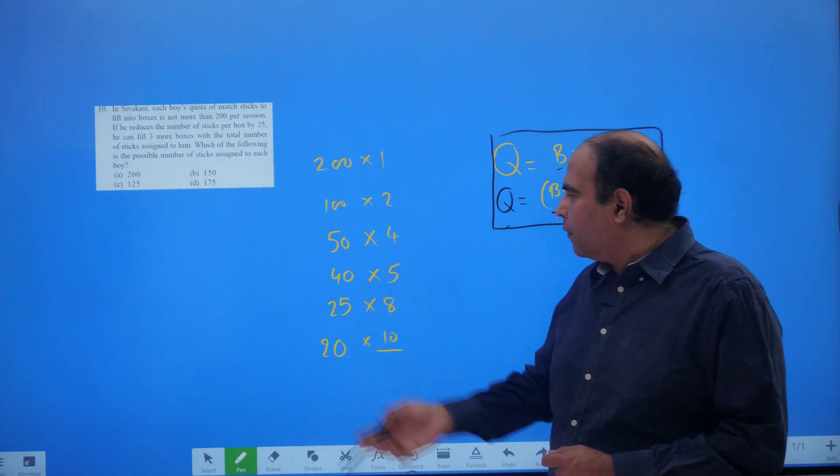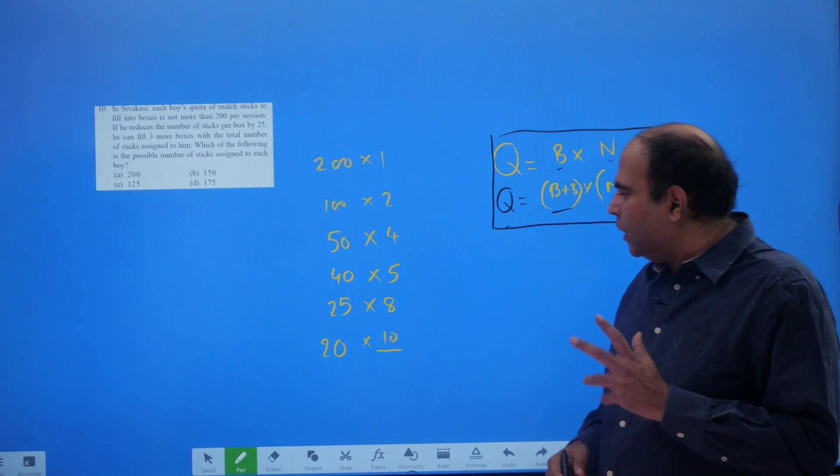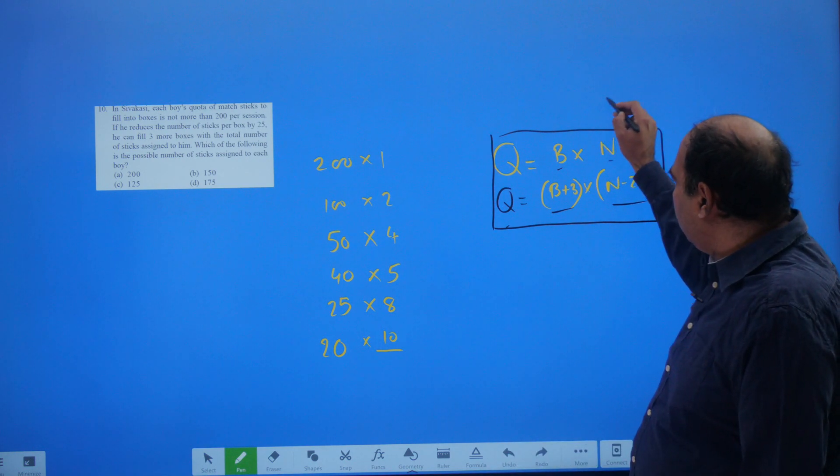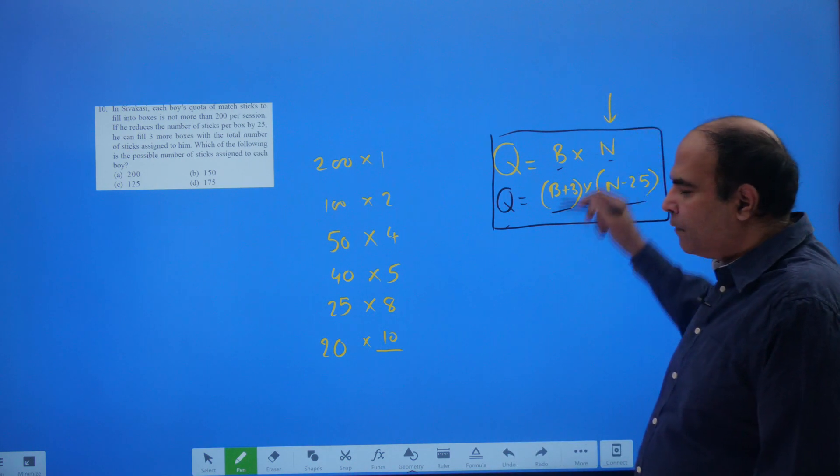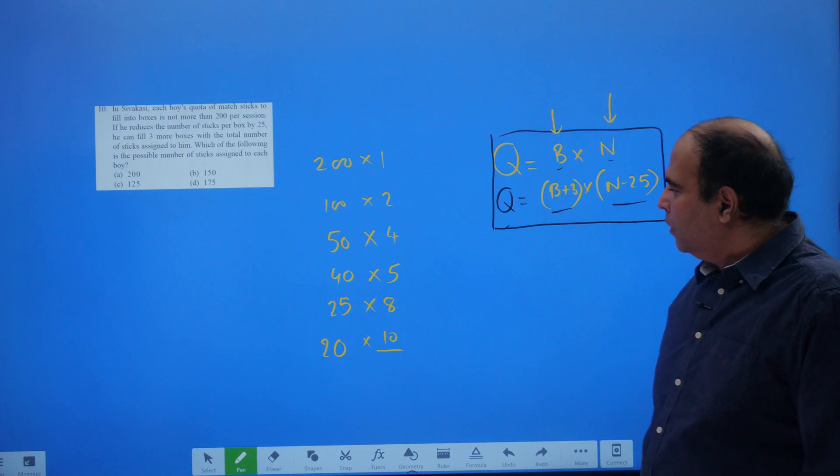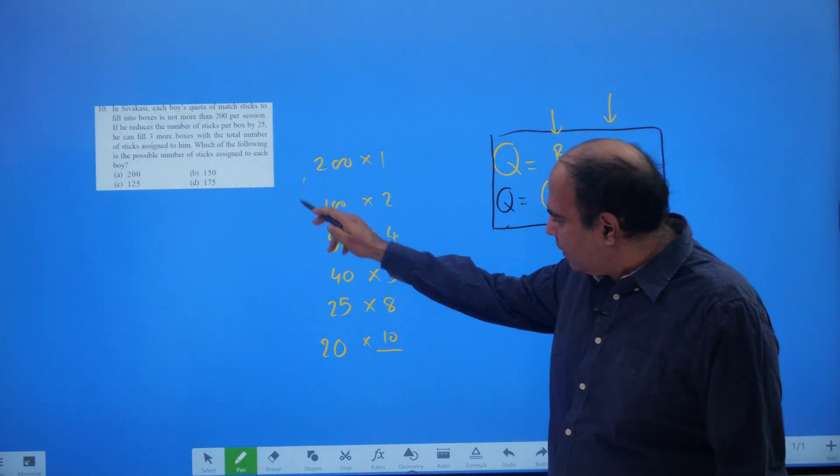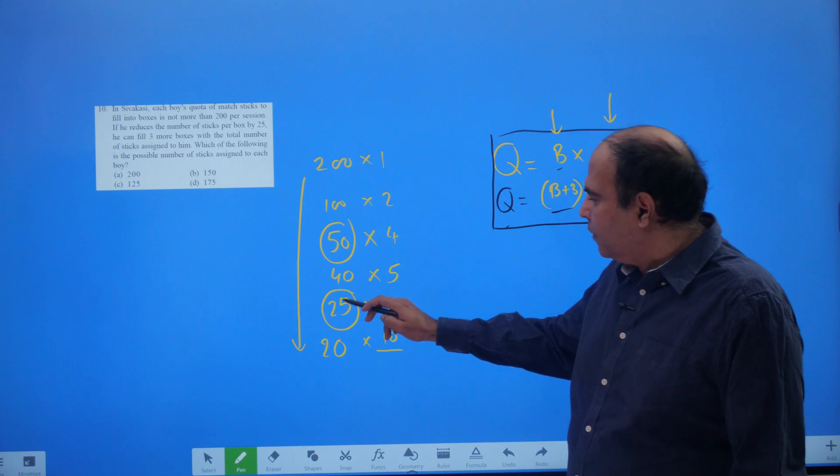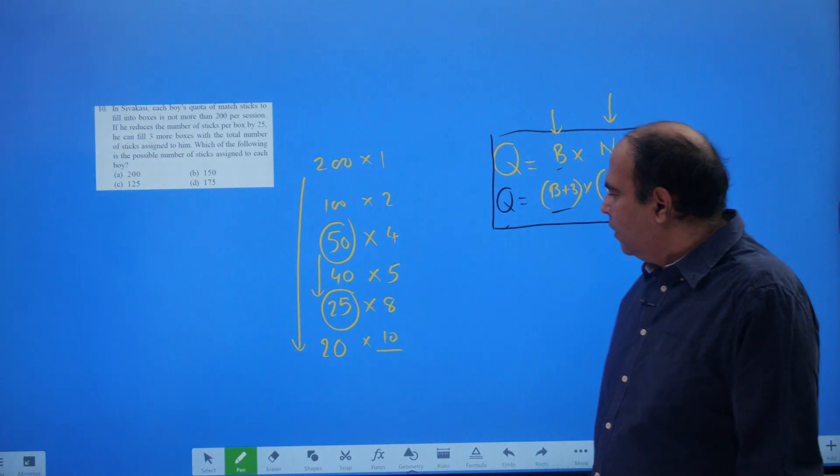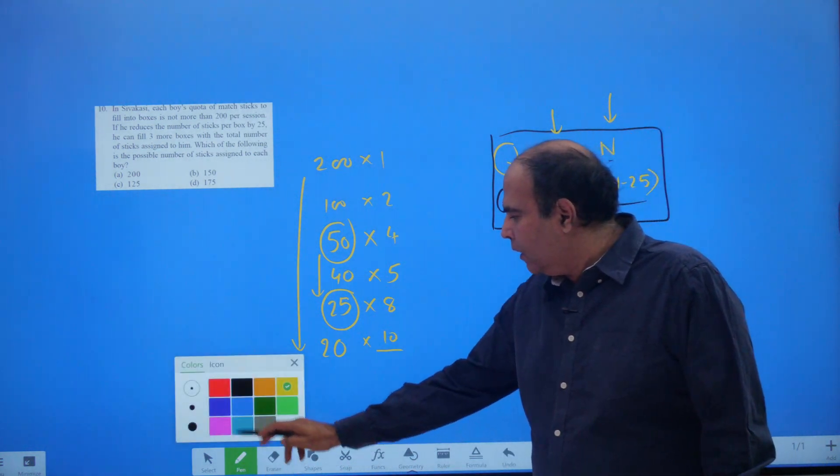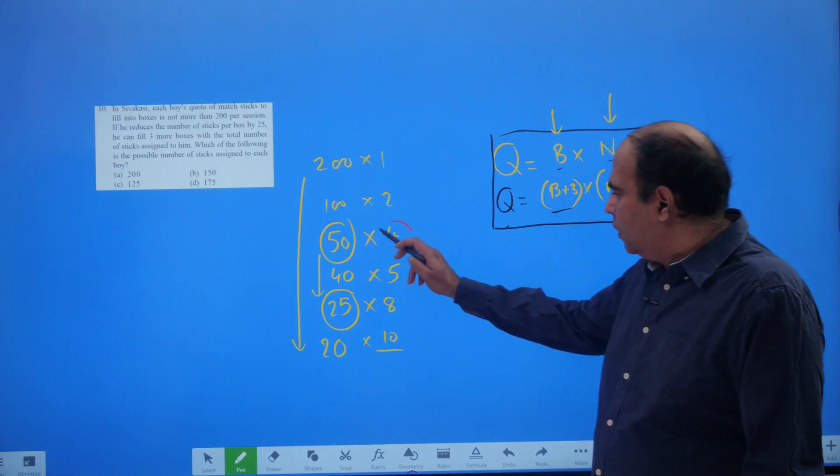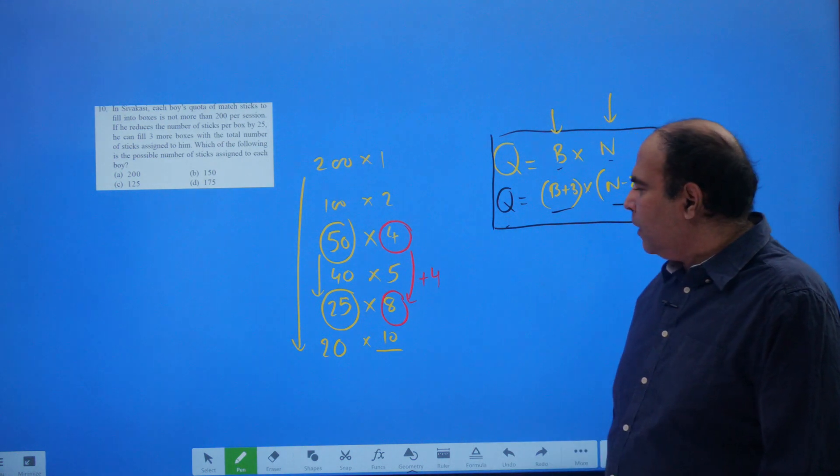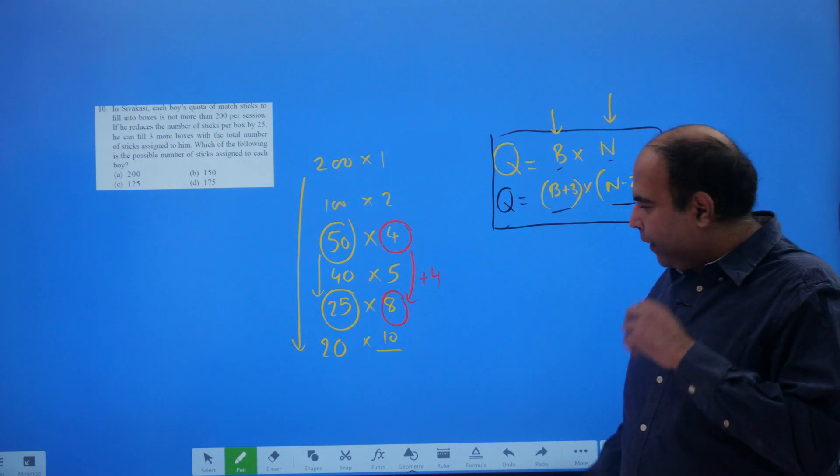So these are the factor pairs. Now if I look inside this factor pairs, on one factor there should be a subtraction of 25, on the other there should be a growth of 3. So if I look through on this side, a subtraction of 25 is available to me from 50 to 25, that's a subtraction of 25. But parallelly on the other side if I look at the growth, the pair factor is gone from 4 to 8, which means that has increased by plus 4.